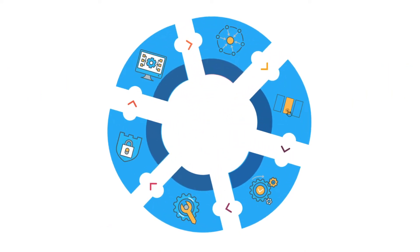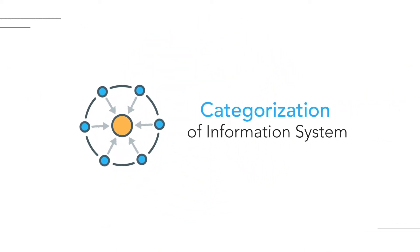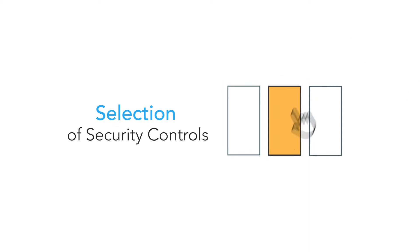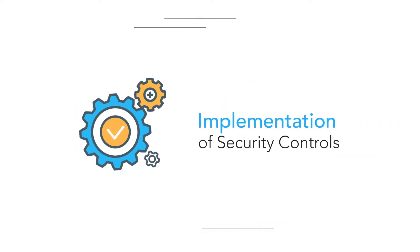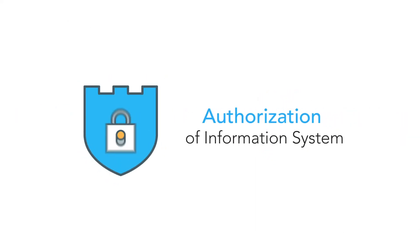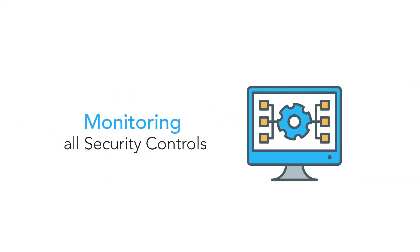The six steps include categorization of information system, selection of security controls, implementation of security controls, assessment of security controls, authorization of information system, and monitoring all security controls.